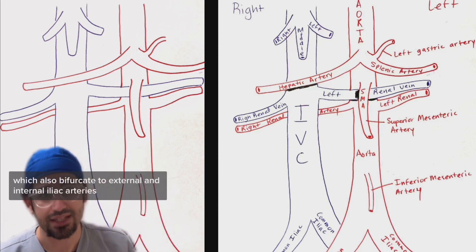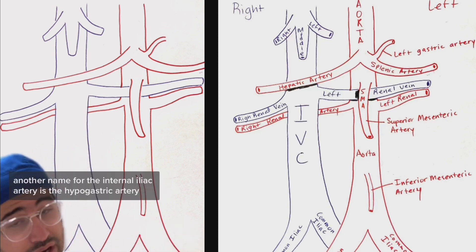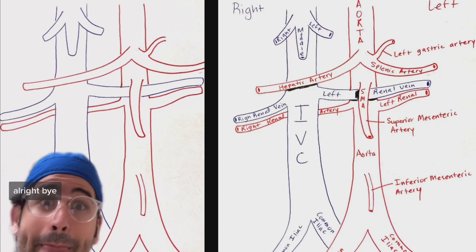Which also bifurcates to external and internal iliac arteries. Another name for the internal iliac artery is the hypogastric artery. All right, bye.